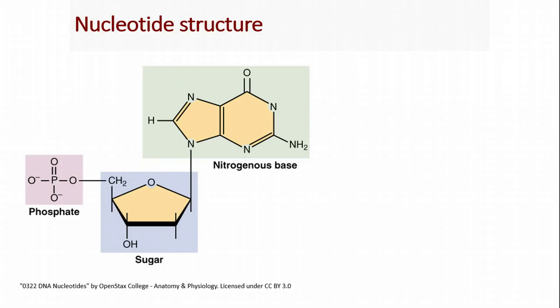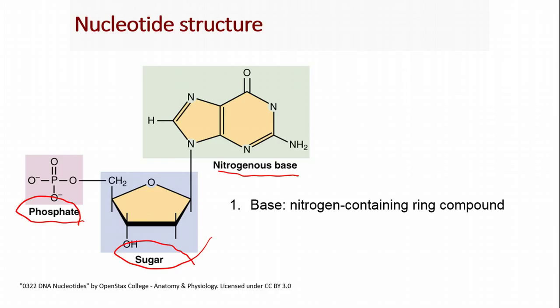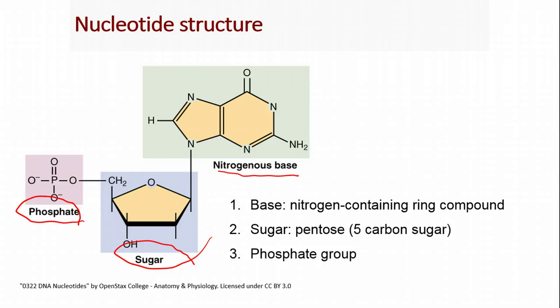First off is the nitrogenous base — the G, T, A, C, and U that we're all familiar with. We'll get into those in a minute. This is bound to a 5-carbon sugar, a pentose sugar. And that is bound to a phosphate group. We're going to talk about each one of these units: the nitrogen-containing base, the 5-carbon sugar, and the phosphate.